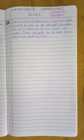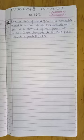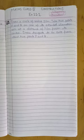Constructions. The question is: draw a circle of radius 3 centimeter, take two points P and Q on one of its extended diameter, each at a distance of 7 centimeter from its center. Draw tangents to the circle from these two points P and Q.